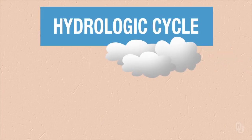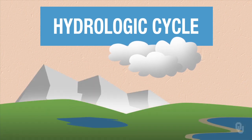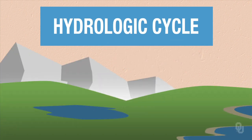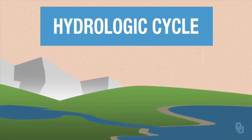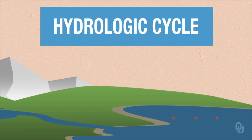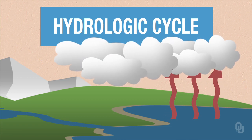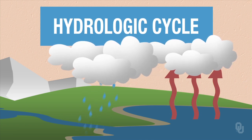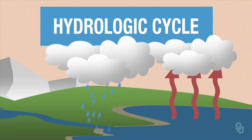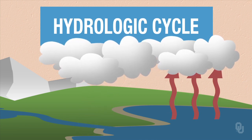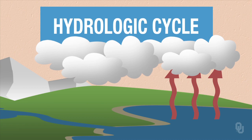So what controls these external processes? It's called the hydrologic, or the water cycle. When rain or snow falls on the earth, the water eventually moves to the oceans where you get evaporation. You put moisture back in the atmosphere, and that moisture then causes precipitation back on the land. That is the hydrologic, or the water cycle.